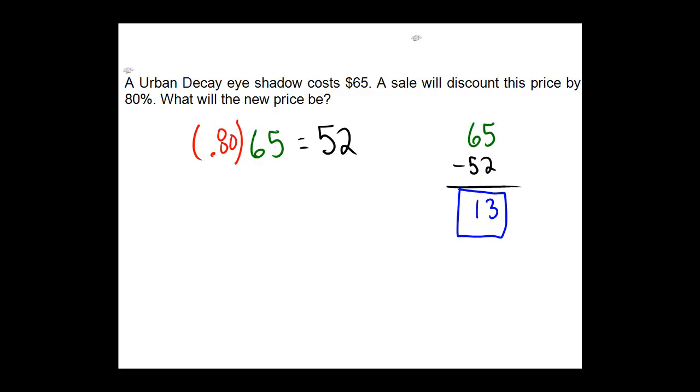An additional technique, you don't need to do this, but an interesting little side is that if something costs $65 and you discount the price by 80%, that means effectively you are retaining 20% of the value. So you can, on these percentage problems, do them in a backwards direction.